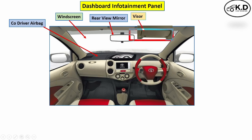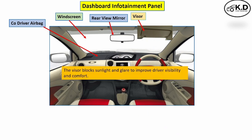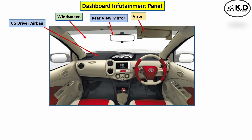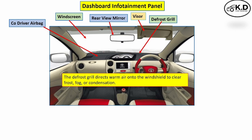The next part is the visor. The function of the visor is to block the sunlight and glare to improve comfort, safe driving, and better visibility. The next part is the defrost grid, located next to the windshield. Its function is to direct warm air to clean the windshield from frost, fog, or condensation for clear visibility.